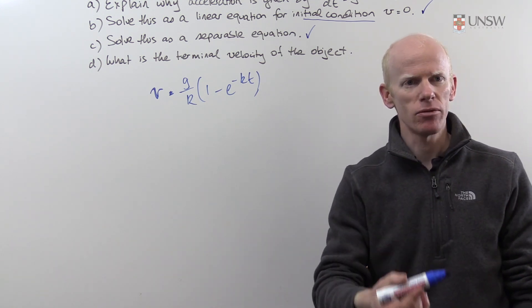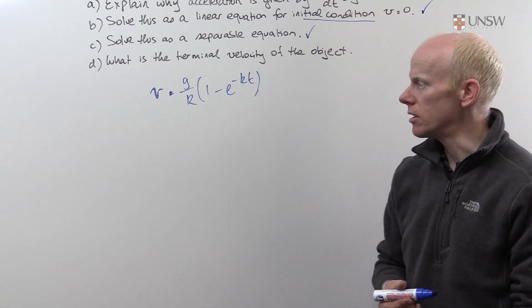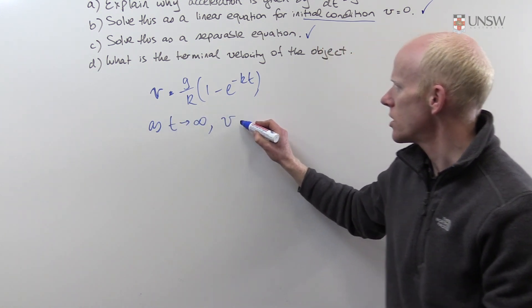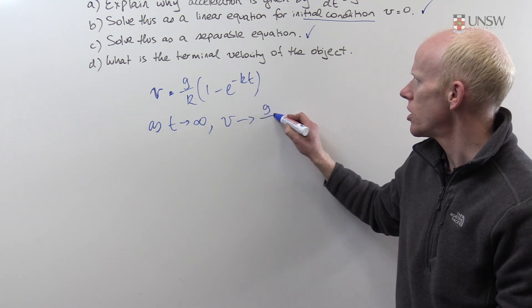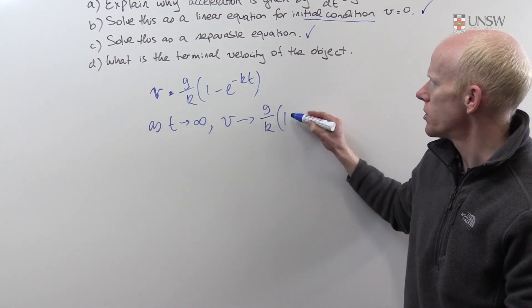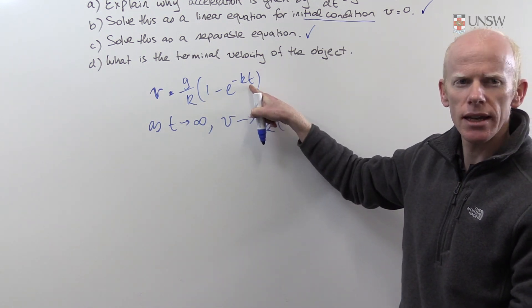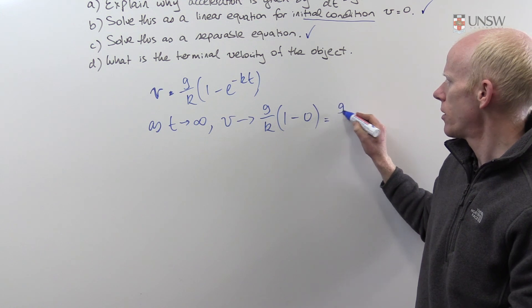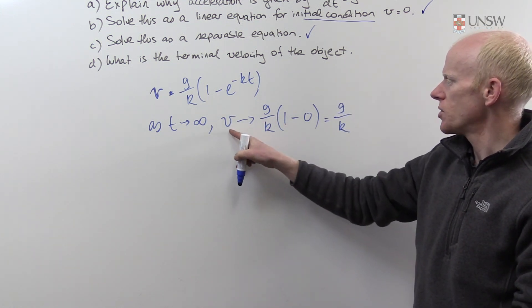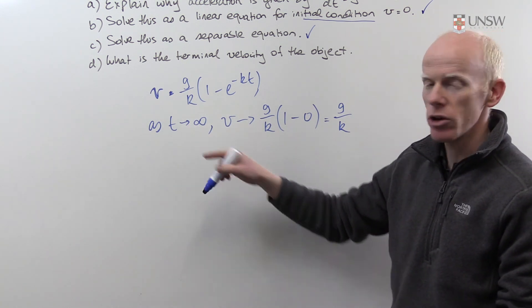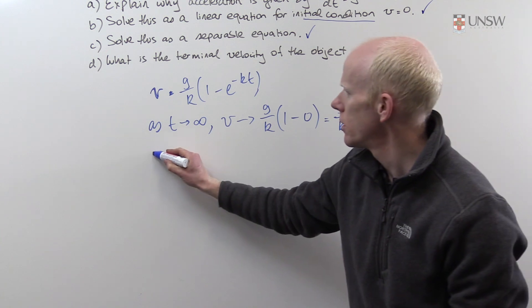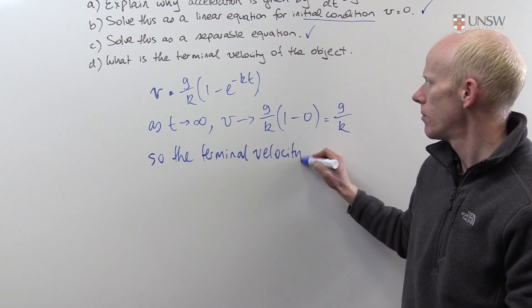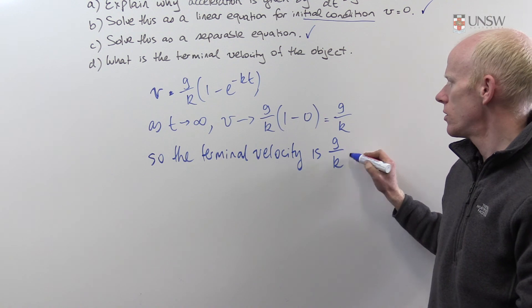So to find the terminal velocity of this object, I'm going to look at the behavior of v as t approaches infinity. As t approaches infinity, v approaches g/k times (1 minus... now as t gets very large here, e to the minus kt gets very small, it approaches 0). So we have velocity approaching g/k as t approaches infinity. It's good to write a conclusion. So the terminal velocity is g/k.